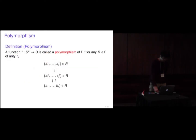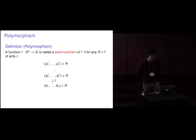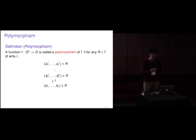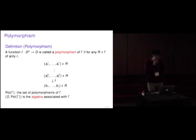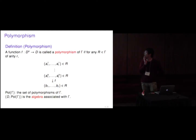What is the algebra? A key component is polymorphism. A function F is called a polymorphism of gamma if for any relation R in gamma of arity r, the following holds: if we take any K tuples from R and apply F coordinate-wise, then we get another tuple (V1, ..., Vr), and (V1, ..., Vr) must be a tuple in R. Let Pol(gamma) be the set of polymorphisms of gamma. The pair (D, Pol(gamma)) is called the algebra associated with gamma, and polymorphisms play a crucial role in the problem.